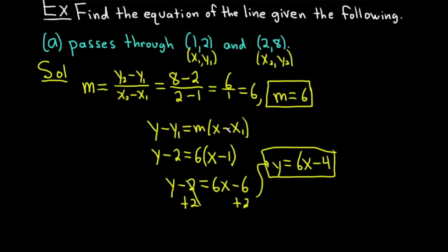So recap. Given two points, if you're trying to find the equation of a line, start by finding the slope, which is m, and then just use your formula y minus y1 equals m times x minus x1. Let's do a harder example.